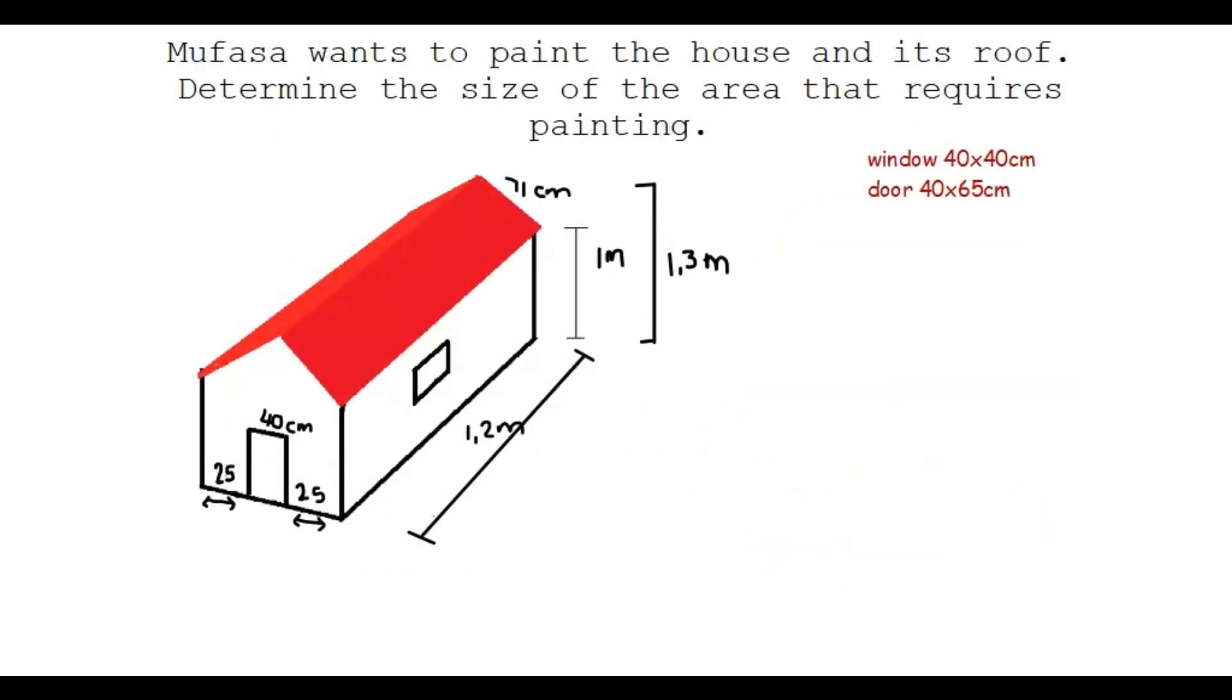Mufasa wants to paint the house and its roof. I'm underlining that because it's important. Determine the size of the area that requires painting. Now, I know you might think they want area, but since this is a 3D object, they are looking for surface area. They also give you that the window is 40 by 40 centimeter. And they only say there's one window, so you can assume there's only one. And the door is 40 by 65. So the length here is 65 because they already give you the width.